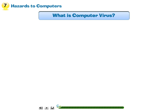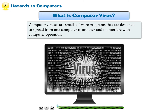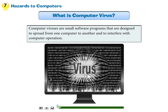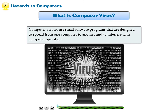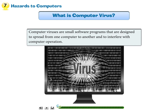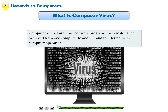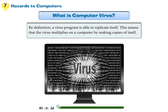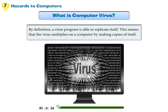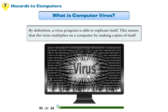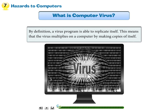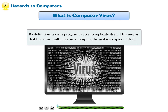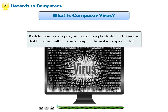What is a computer virus? Computer viruses are small software programs that are designed to spread from one computer to another and to interfere with computer operation. By definition, a virus program is able to replicate itself — meaning the virus multiplies on a computer by making copies of itself.